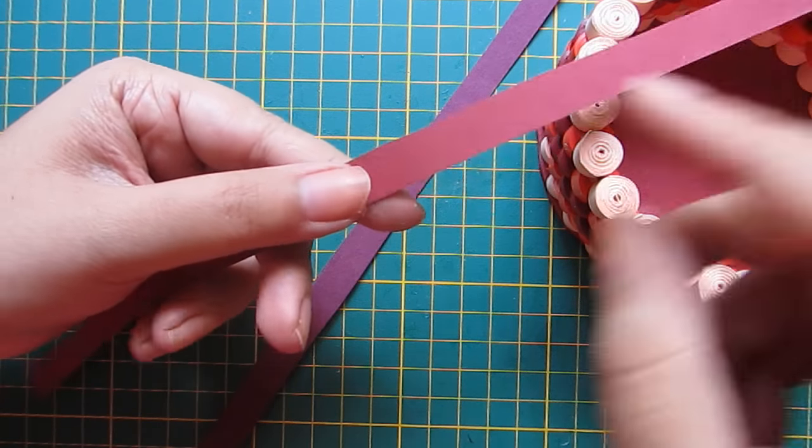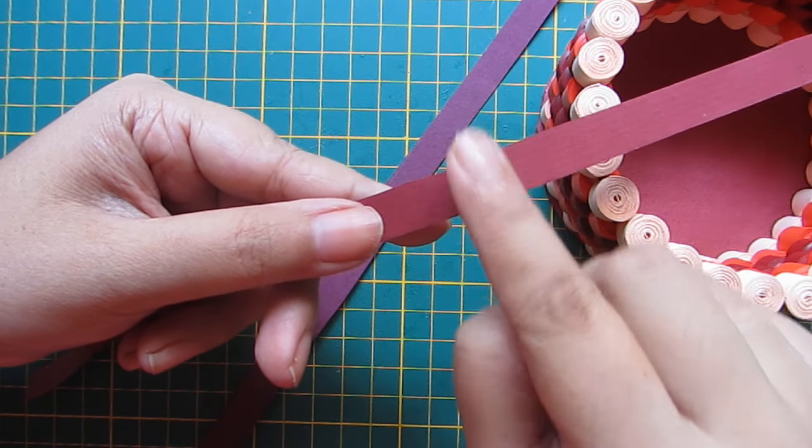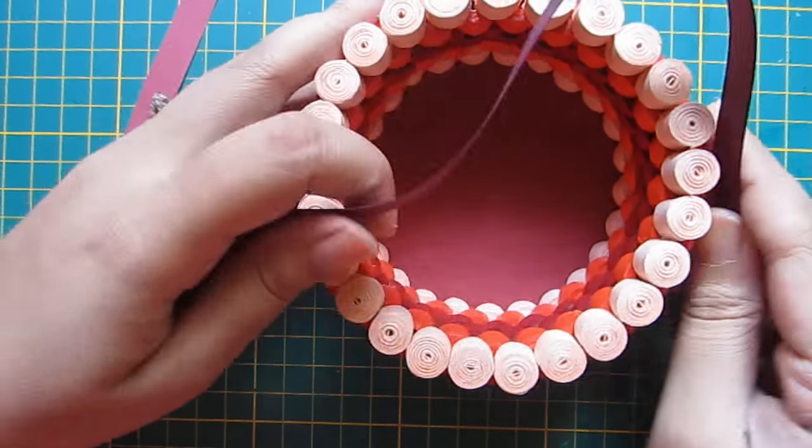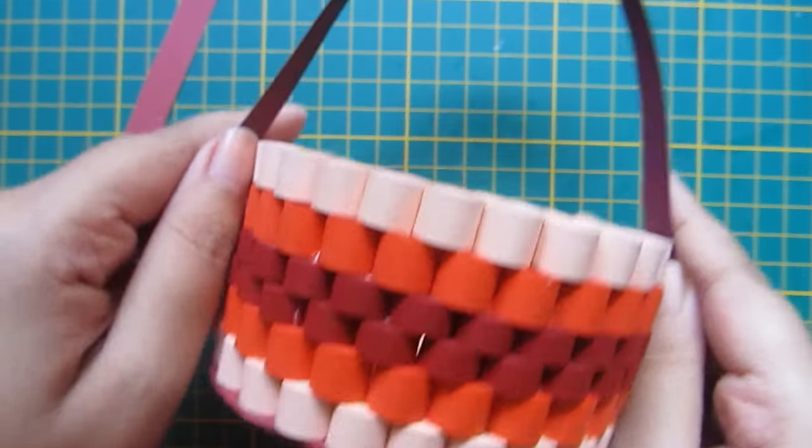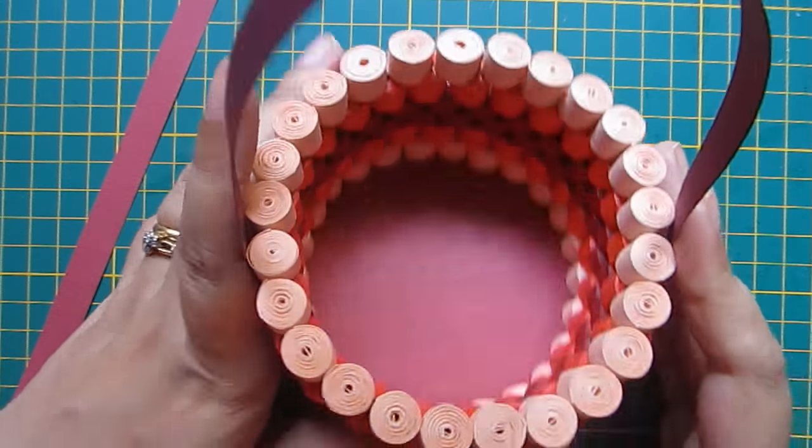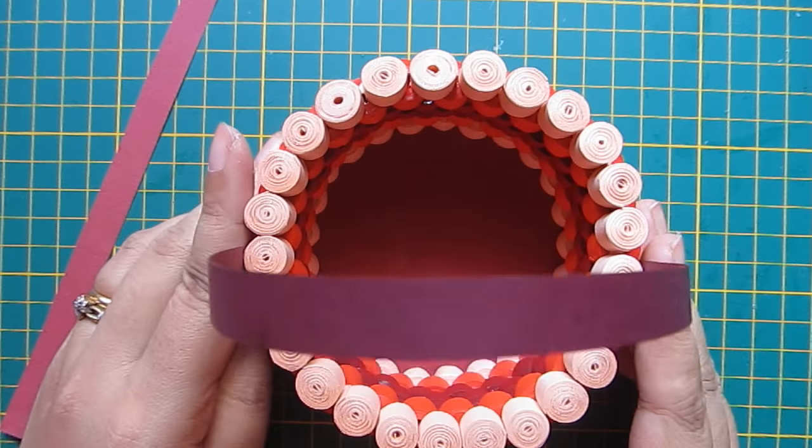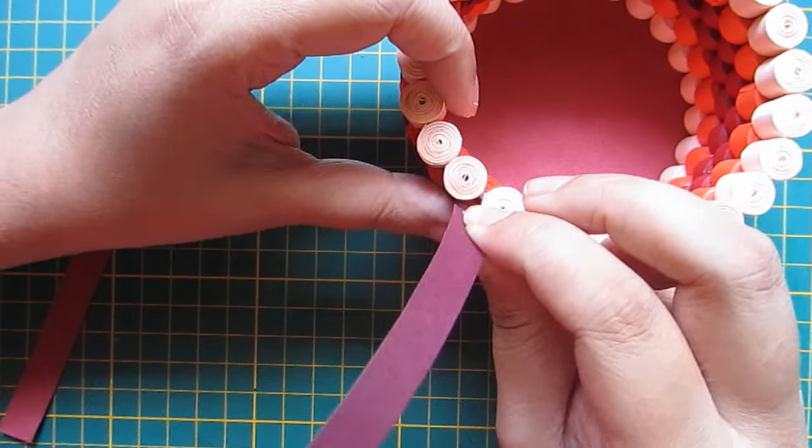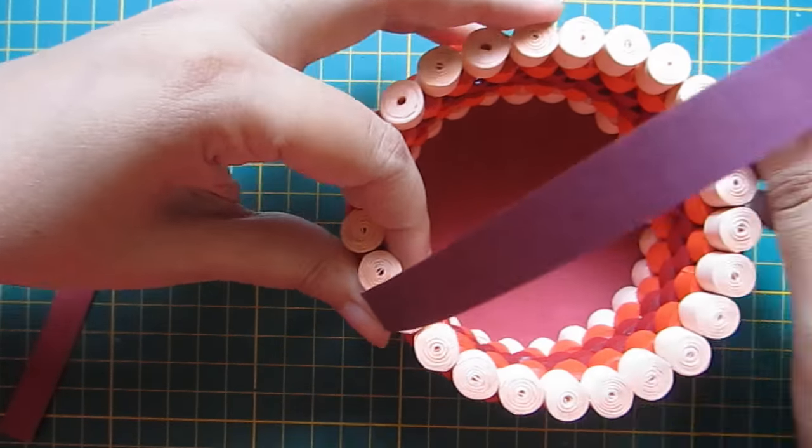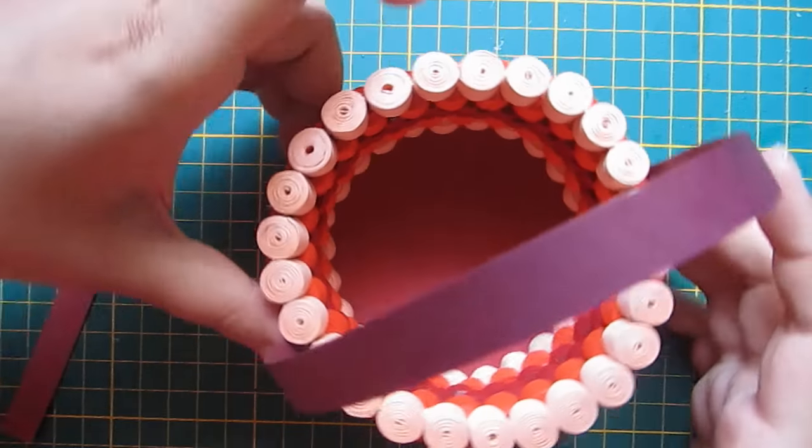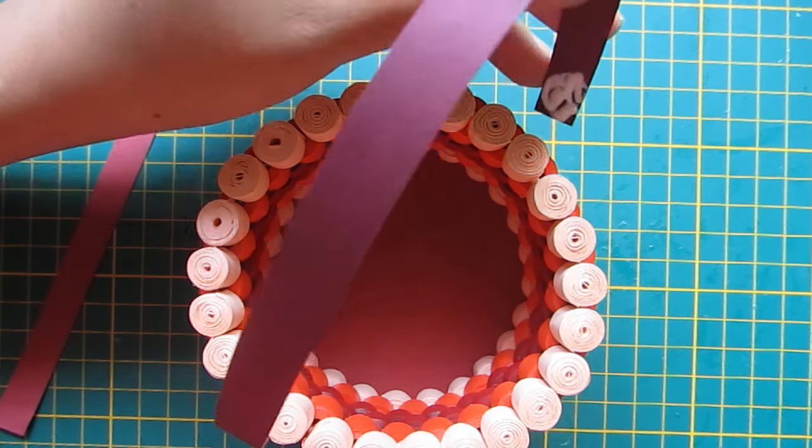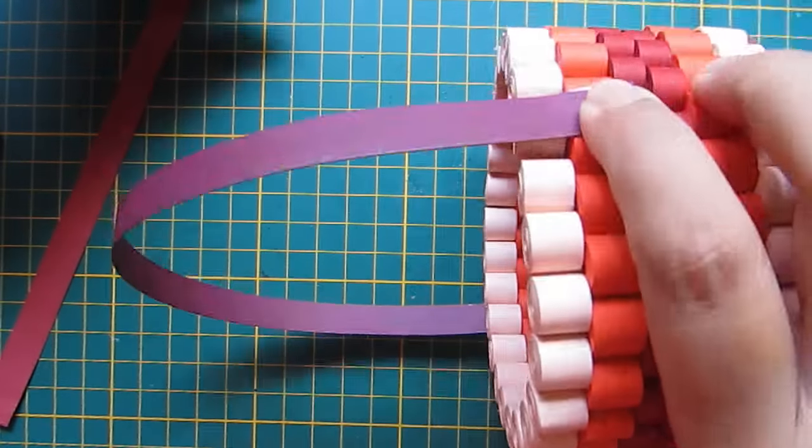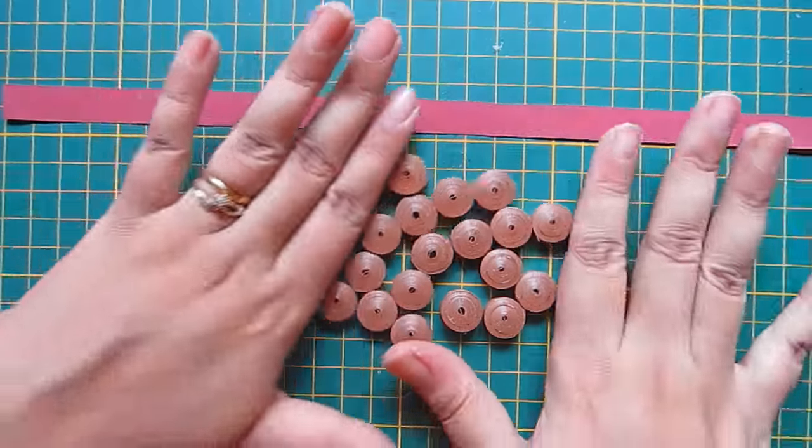So now first I will add this cardboard strip to the basket like this. Just add glue on one end. Now add glue on the other end and paste it. Hold it for some time.